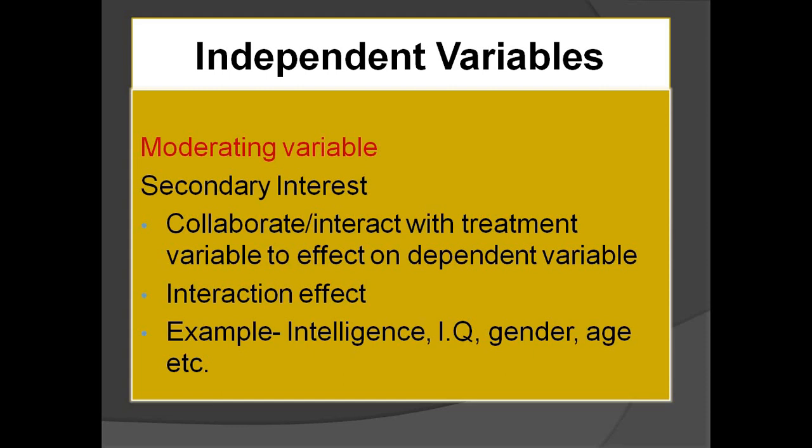Moving towards moderating variables — these are also of secondary interest. They interact with treatment variables to affect the dependent variables. For treatment variables we study the main effect, but for moderating variables we study the interaction effect. Examples include intelligence, IQ, gender, and age. In the controlled variable example we controlled intelligence through two methods, but if we don't want to or can't control intelligence as a variable, then we can study its interaction effect and it becomes a moderating variable.